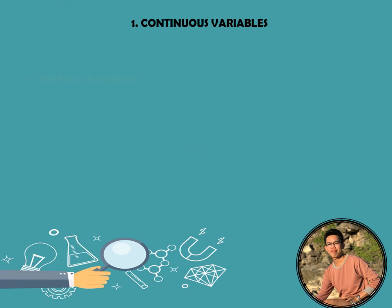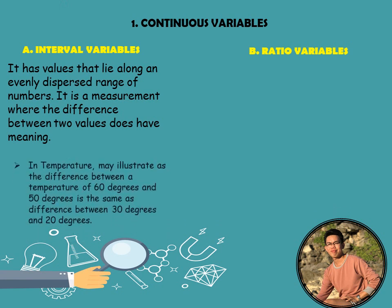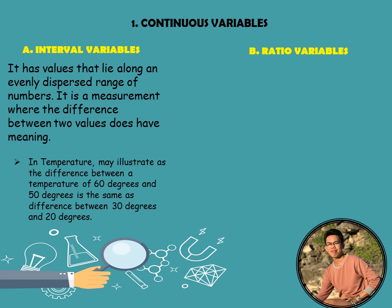Continuous variables can be further categorized into two types: interval variables and ratio variables. Let us define interval variables first. It has values that lie along an evenly dispersed range of numbers. It is a measurement where the difference between two values does have meaning. It has equal intervals between adjacent categories and has an order. For example, in temperature, the difference between 60 degrees and 50 degrees is the same as the difference between 30 degrees and 20 degrees — both are 10 degrees.